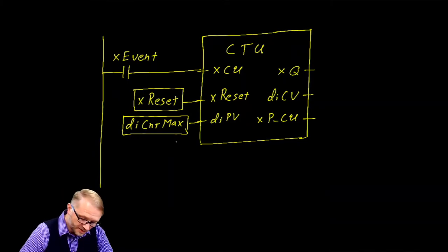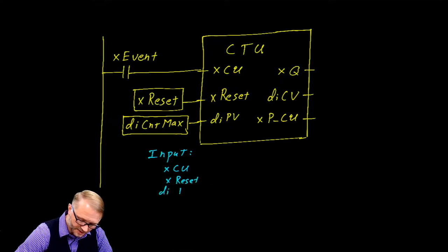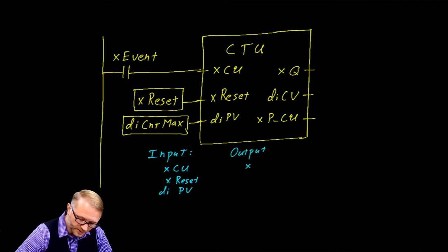To better understand this counter, let's put it into that structure that we've been using throughout class. We have our inputs as a boolean count up, a boolean reset, a double integer called programmed value. On the outputs, we have a boolean Q, a double integer current value, and a boolean — the previous value of count up.